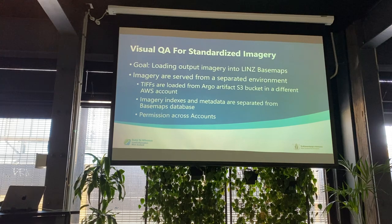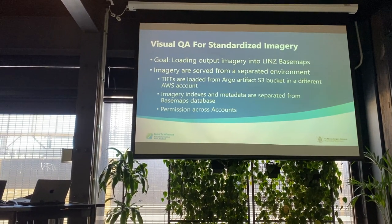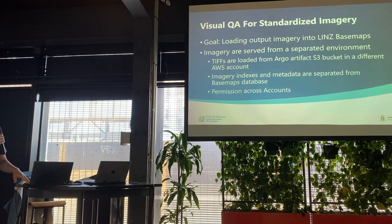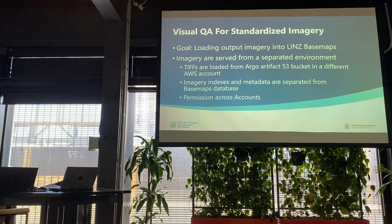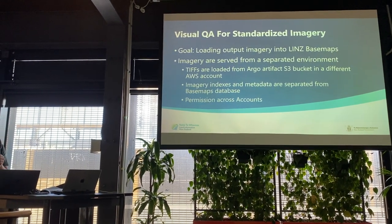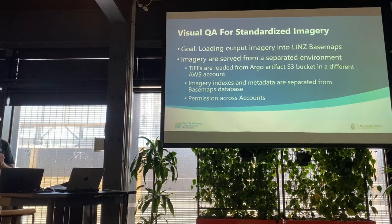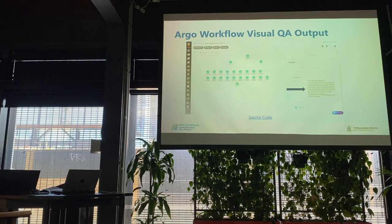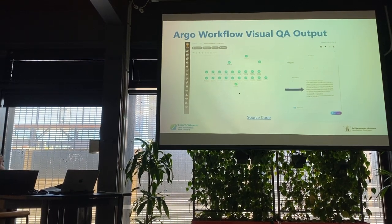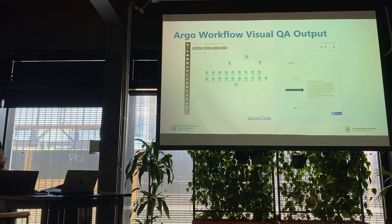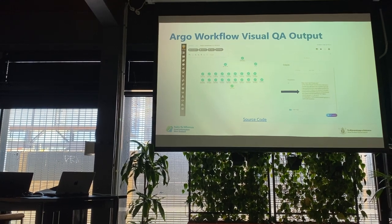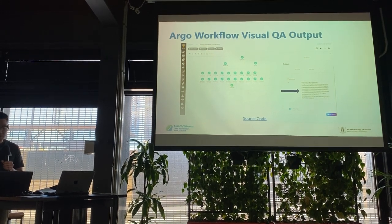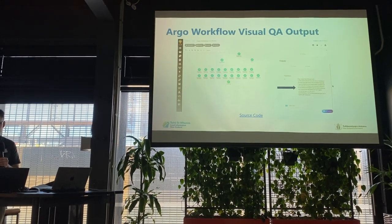There are a few challenges. All output TIFF files are saved in a different AWS account with a different structure, so we need configurations like imagery metadata and indexes that the basemap system requires. We have to create a temporary configuration file alongside these TIFF files and upgrade the basemap to load the config as a standalone system, handling permission changes when loading config files from different AWS accounts. In the workflow, the last task — create config — is for enabling the visual QA, outputting a link to the QA page that loads this config and points to all the imagery.